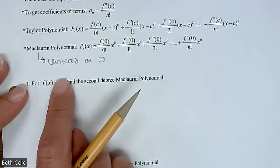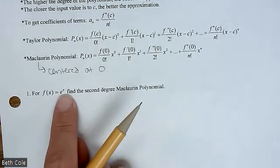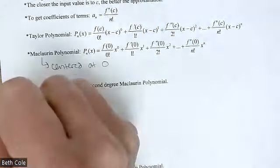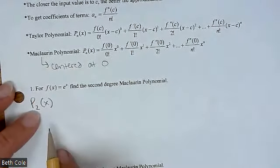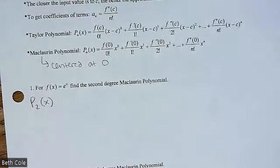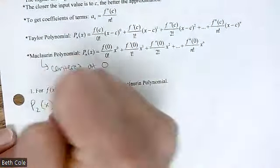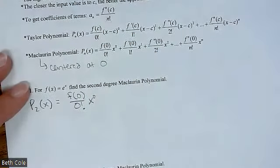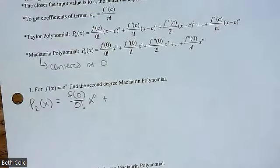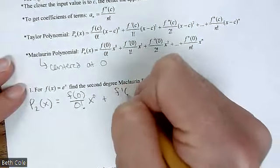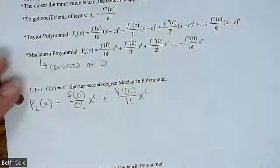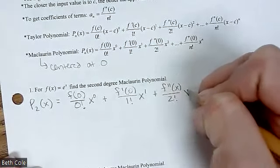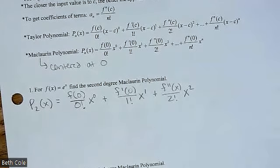For the function e to the x — e to the x is the easiest one to do because the derivative of e to the x is e to the x, and the second and third derivatives as well. We want to find the second degree Maclaurin polynomial. So p sub 2, indicating second degree, centered at 0. I write this out: f(0) over 0 factorial times x to the 0, plus the first derivative at 0 over 1 factorial times x to the 1, plus the second derivative over 2 factorial times x squared. I stop there because it said second degree.